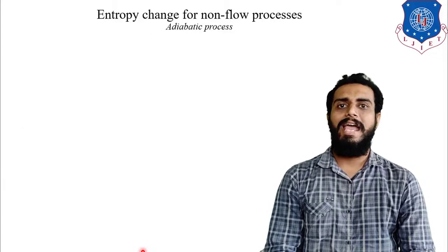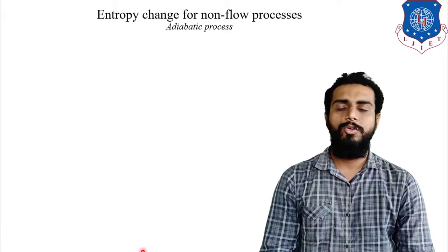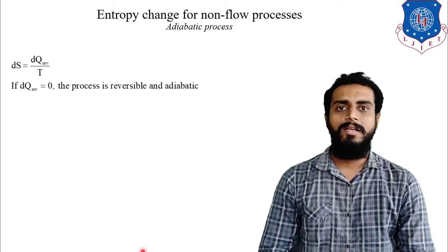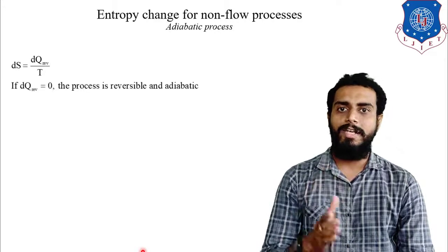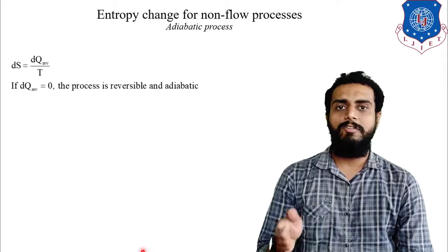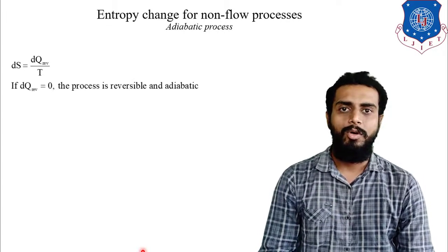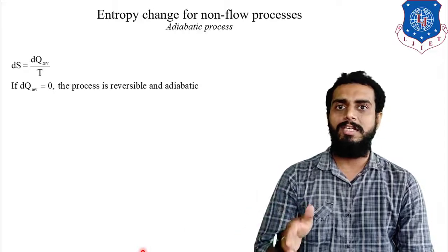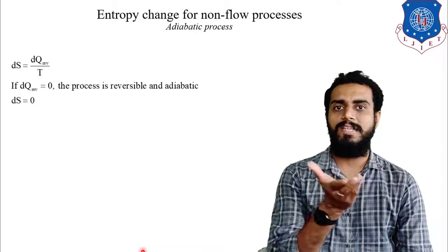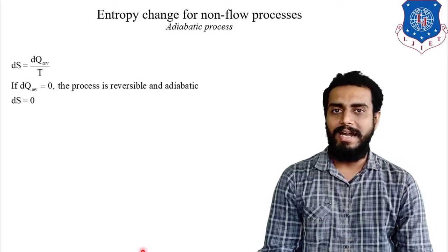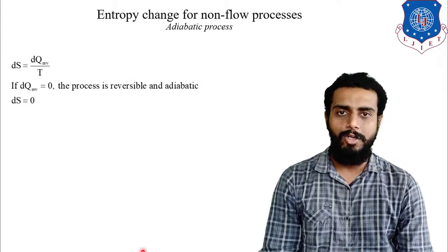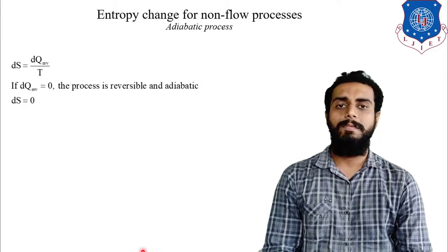For the adiabatic process, since there is no heat transfer, dQ = 0, and for a reversible adiabatic process dQ_reversible = 0. Since dS = dQ_reversible/T, the entropy change dS = 0. So for a reversible adiabatic process the entropy will be constant.